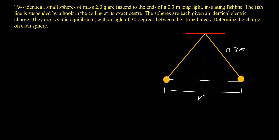Let's start with the free body diagram. I have the gravity force, the electrostatic force pointing away from each sphere because the charges are identical and therefore repulsive, and the tension from the string. The total angle between the strings is 30 degrees, so each half-angle is 15 degrees.